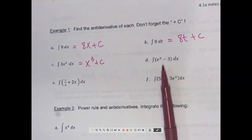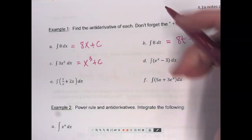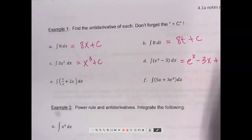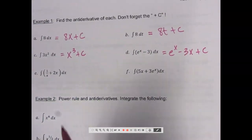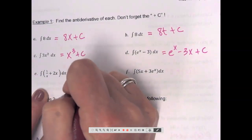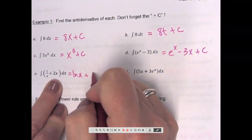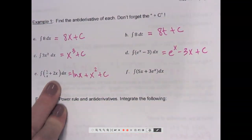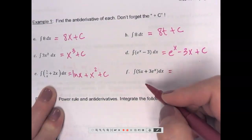What's the antiderivative of e to the x? e to the x. What's the antiderivative of negative 3? Negative 3x. And there could have been a constant. For 1 over x, the antiderivative is natural log of x, plus x squared, plus maybe a number. What about 5x — what do we start with?